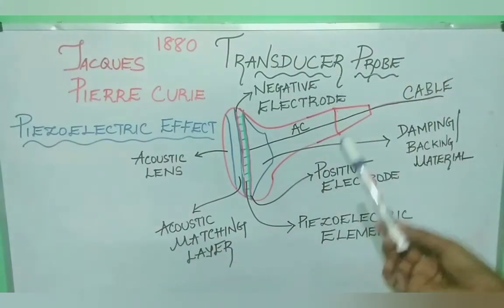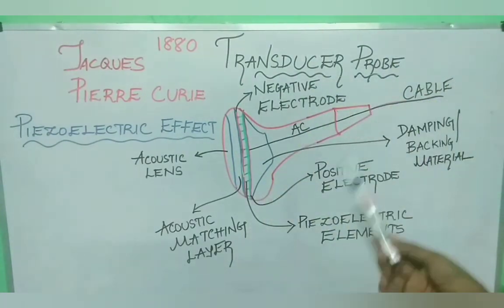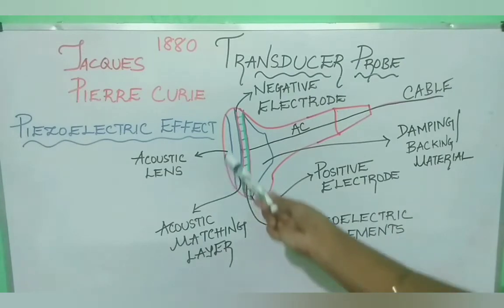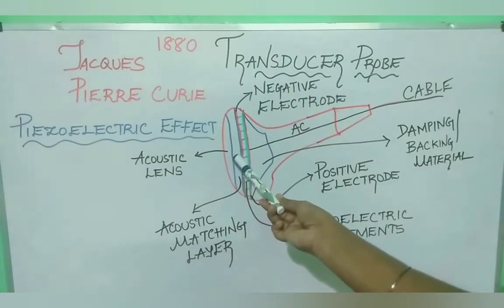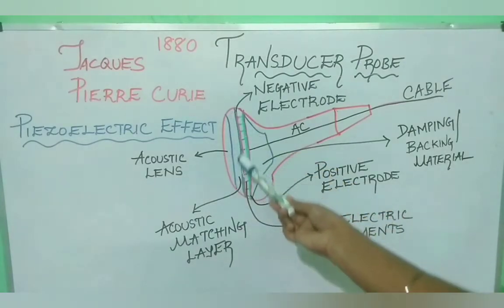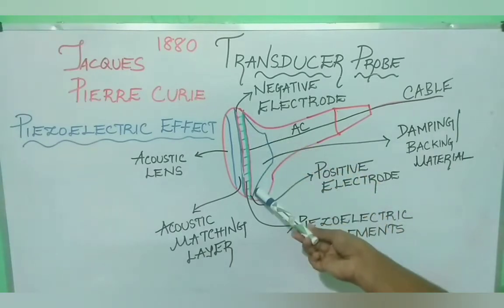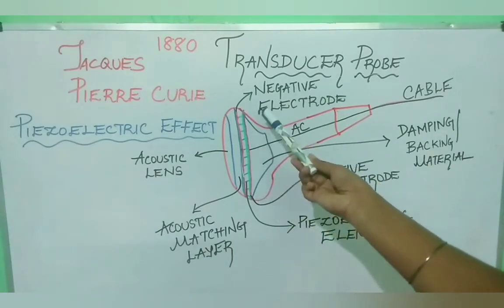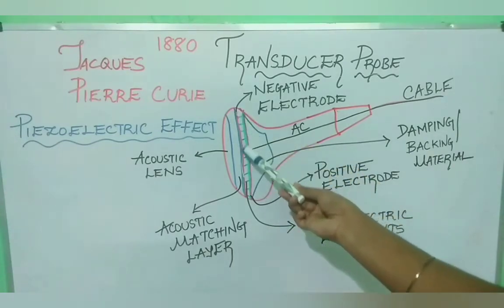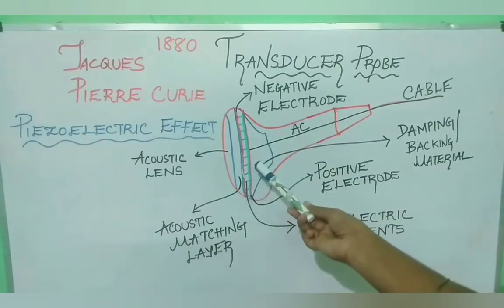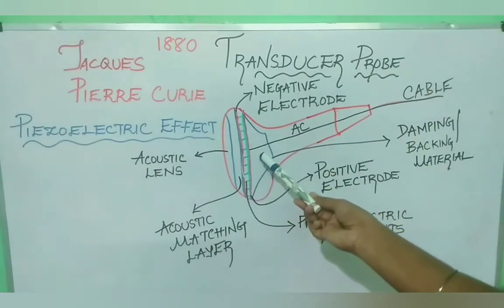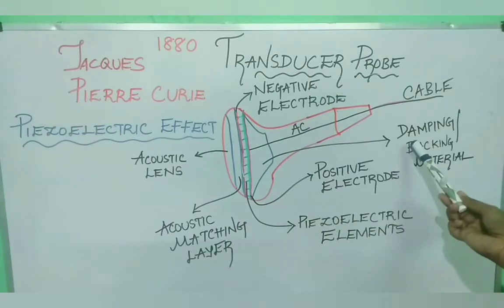A transducer probe is made of following components: acoustic lens, acoustic matching layer, negative electrode, positive electrode. In between both electrodes it has piezoelectric elements. Just behind the positive electrode it has damping or backing material.